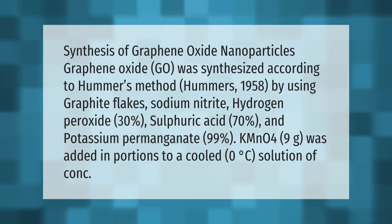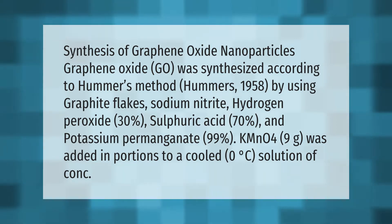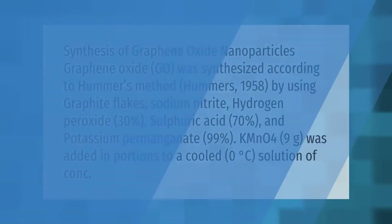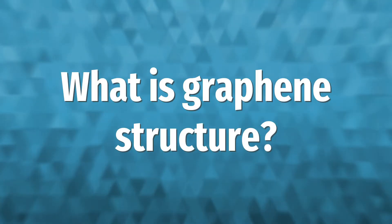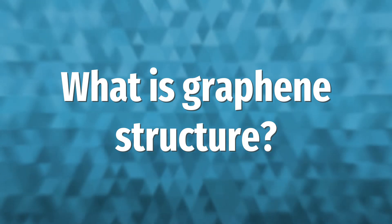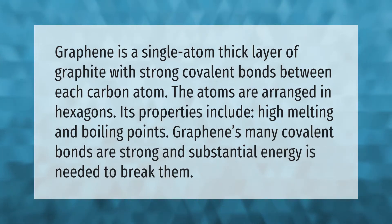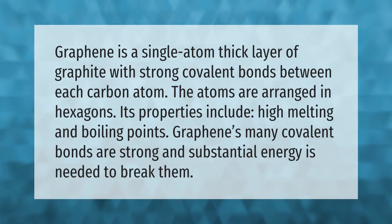To a cooled zero degrees Celsius solution. Graphene is a single atom thick layer of graphite with strong covalent bonds between each carbon atom. The atoms are arranged in hexagons. Its properties include high melting and boiling points.